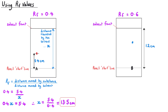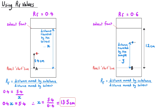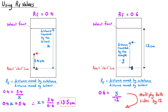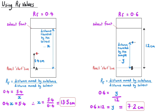Alternatively, you could be given that the distance travelled by the solvent is 12 centimetres and the RF value is 0.6, and asked to calculate the distance travelled by the sample. Start with the full RF equation, substitute in 0.6 and 12, then multiply both sides by 12 — that cancels on the right-hand side — giving 0.6 multiplied by 12 equals the distance travelled by the sample, which is 7.2 centimetres.